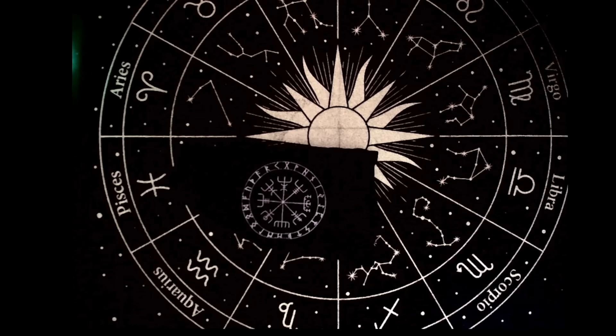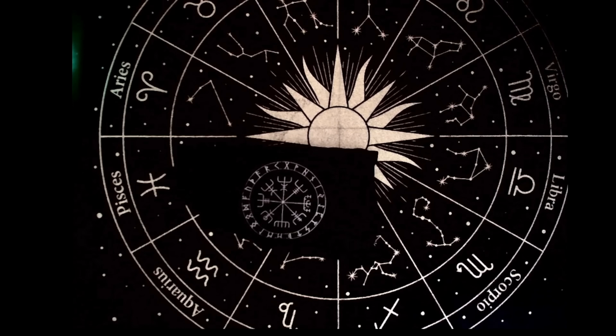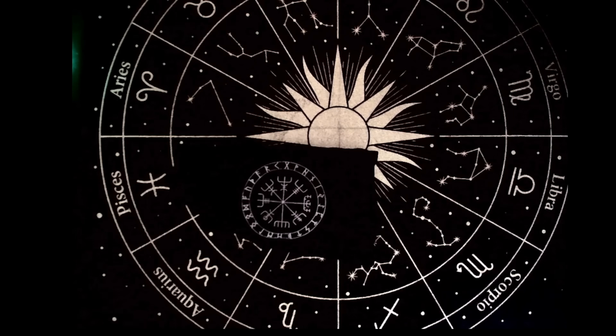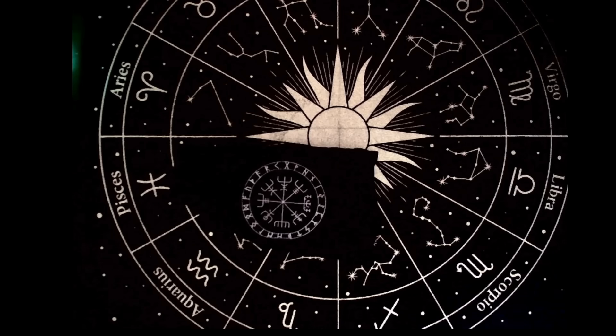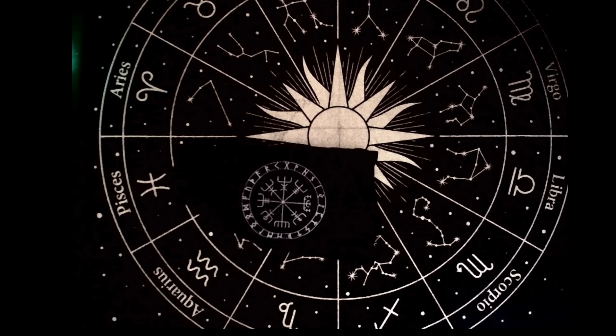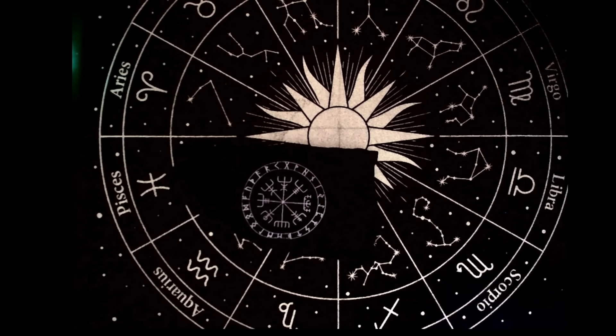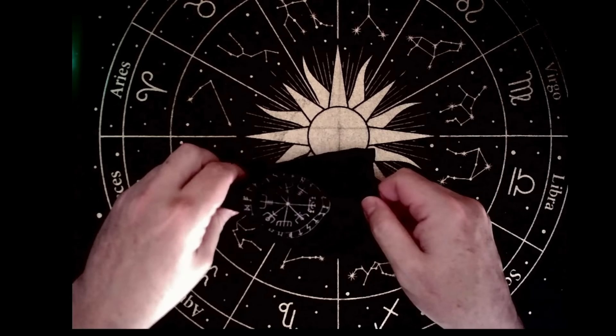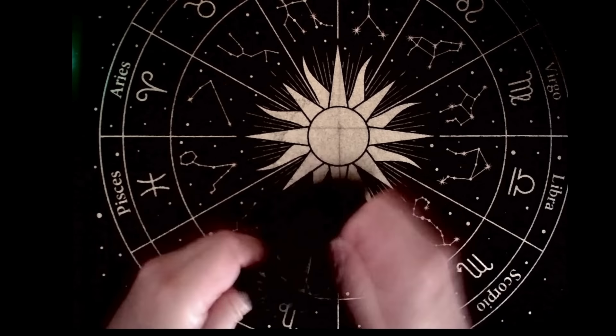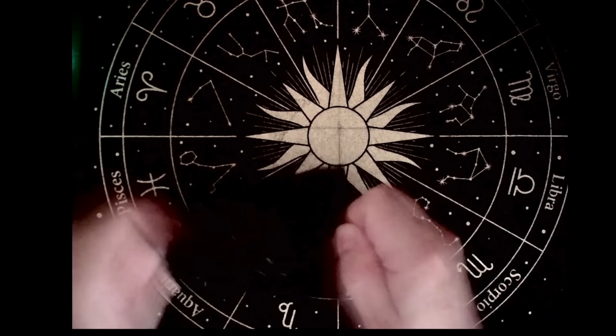Alors, je pose la question directement, parce que finalement, c'est ce que certains vont se poser comme question. Moi, je préfère laisser les runes nous parler. Donc, quels sont les liens entre Emmanuel Macron et la famille Rothschild?